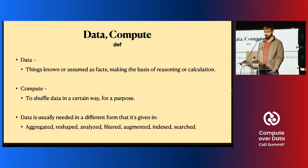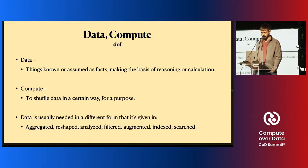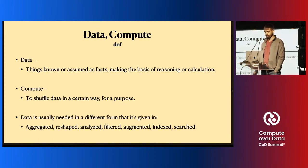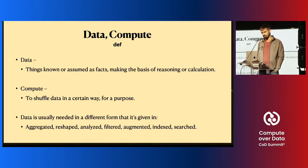First of all, data and compute. Data is things known or assumed as facts, making the basis of reasoning or calculation. And to compute, from my opinion, it means to shuffle data in a certain way for a purpose. Data is usually needed in a different form than it appears — aggregated, reshaped, analyzed, filtered, augmented, indexed, searched and so on. We need data in many, many shapes and forms.